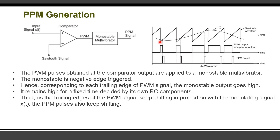When the message signal amplitude is higher compared with the sawtooth waveform, we get positive saturation. After that point, when the sawtooth waveform amplitude is higher compared with the message signal, we get negative saturation. In a similar manner during the third pulse, when the message signal amplitude is higher, we get positive saturation, and when the sawtooth waveform amplitude is higher, we get negative saturation. This is how we obtain the pulse width modulated signal.